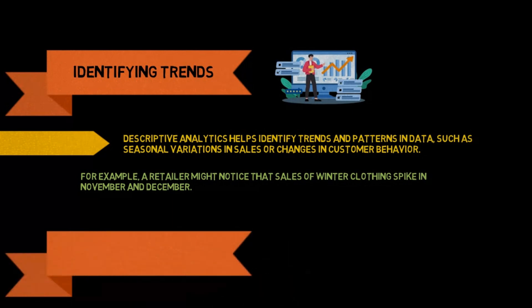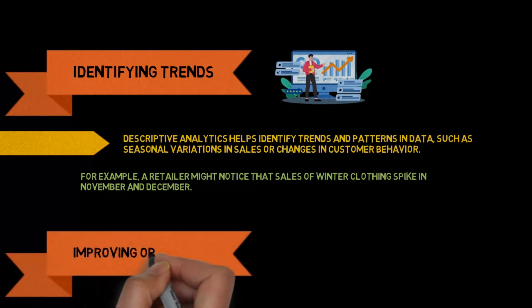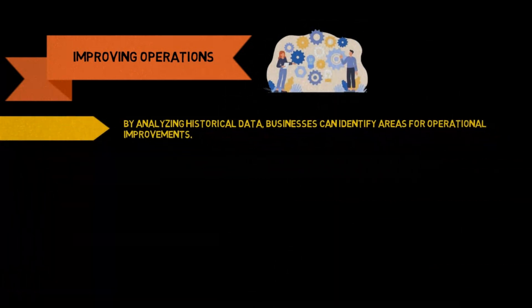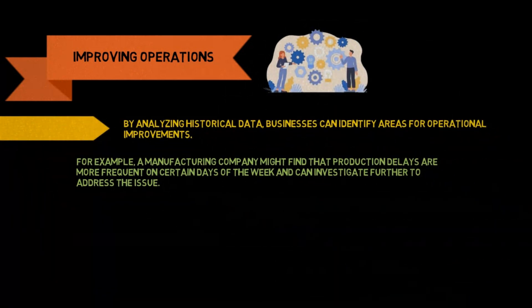Improving operations: by analyzing historical data, businesses can identify areas for operational improvements. For example, a manufacturing company might find that production delays are more frequent on certain days of the week and can investigate further to address the issue.